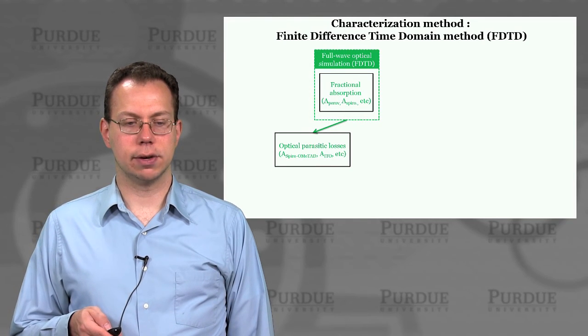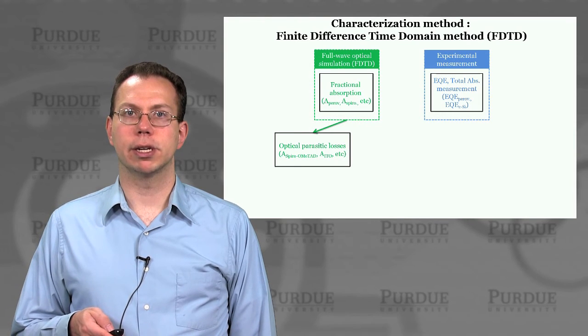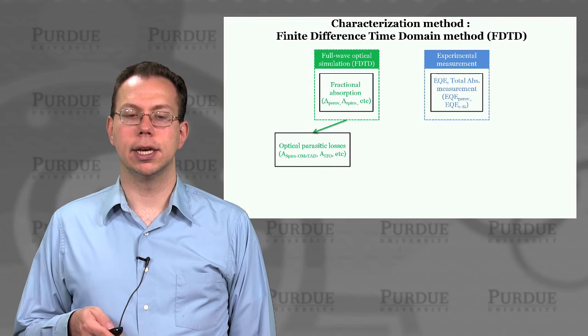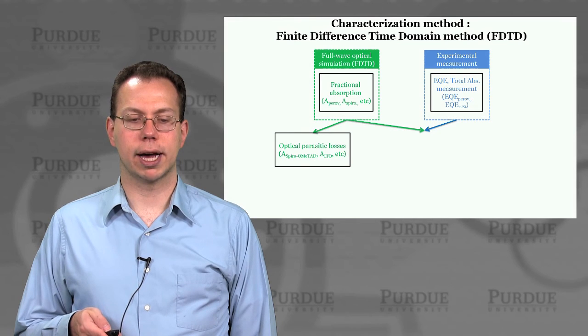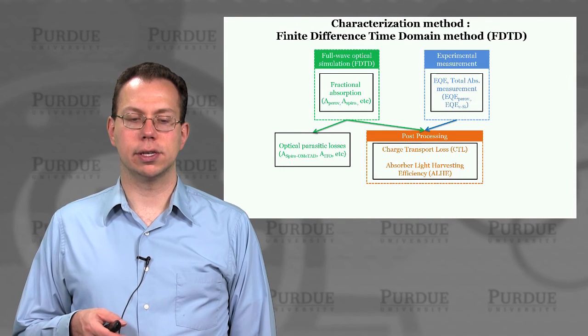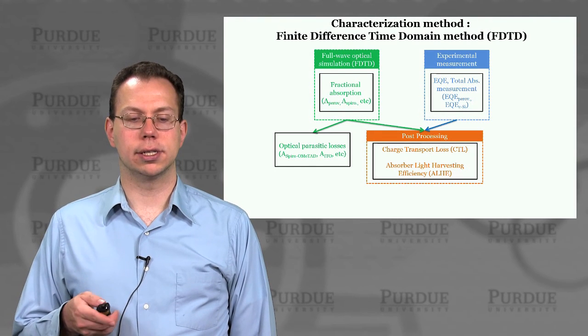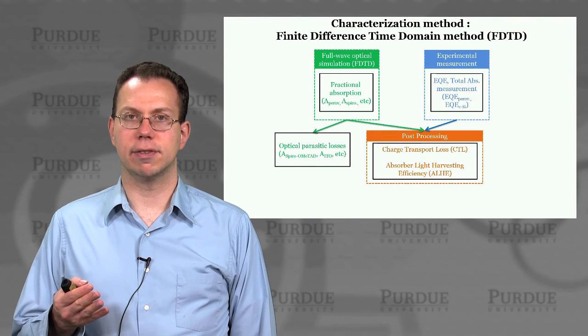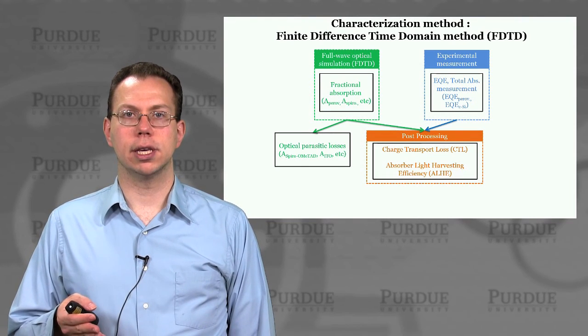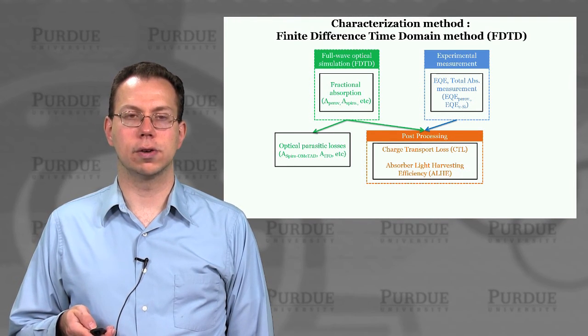And so that basically is something we can quantify, and then we can compare that to experimental data on solar cells, which oftentimes would be stuff like external quantum efficiency, total absorption, and reflection. So that goes back to what I showed you earlier with the literature. And then that combination of information allows you to extract the charge transport loss in the system, or another way to put it is the so-called absorber light harvesting efficiency, which is different from internal quantum efficiency because it takes out the parasitic absorption effects that oftentimes would degrade internal quantum efficiency.